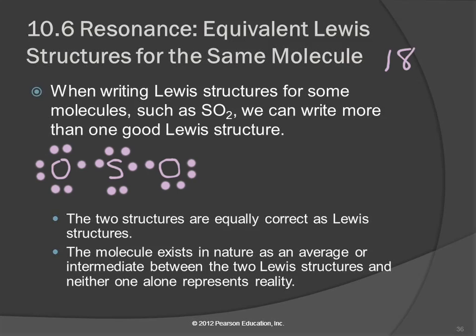Does everybody have an octet? No — we're short a couple of electrons. So what we do is take a lone pair and convert it into a bonding pair. Let's move that lone pair in to form a double bond.